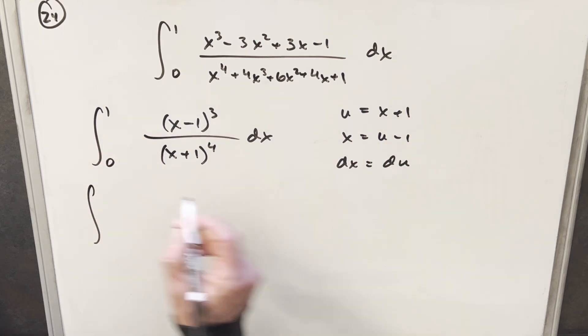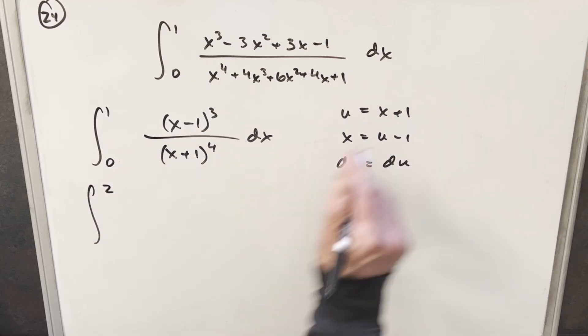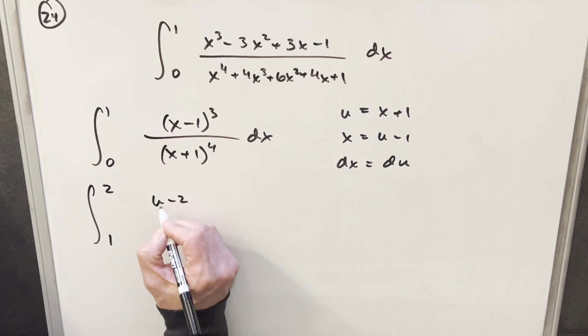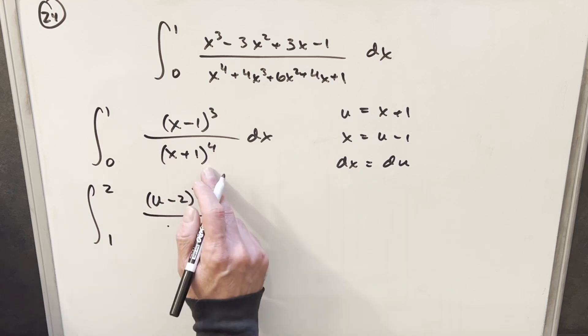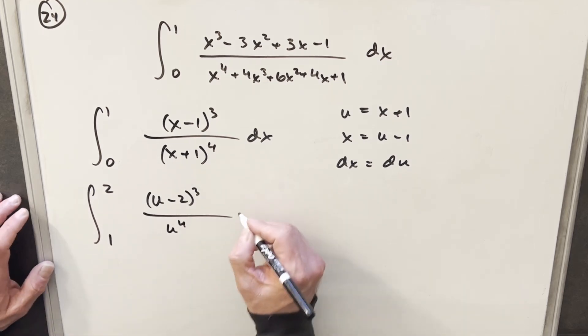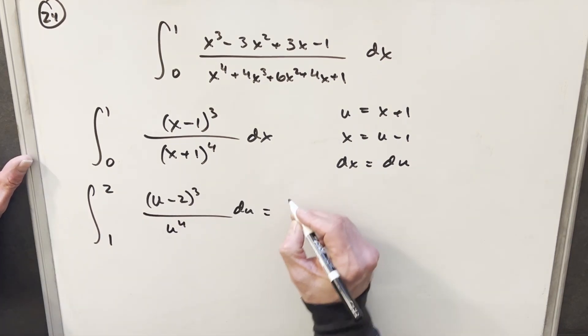We'll plug a 1 in here, so we're going to have a 2. Then we'll plug a 0 in here, and we're going to 1. Then in the numerator, plug in the u minus 1, and we're going to have u minus 2 cubed. And then x plus 1, so that's just our u, so we're going to have u to the 4th in the denominator. Then what I'll do is I'm just going to take this u minus 2 cubed, and I'm just going to expand it all the way out.